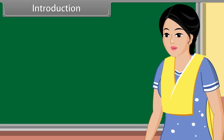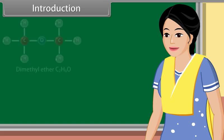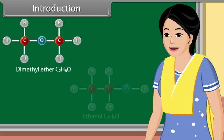The organic compounds which have the same molecular formula but different configurations are called isomers. The examples of isomers are dimethyl ether and ethanol — they have the same molecular formula but different configuration.